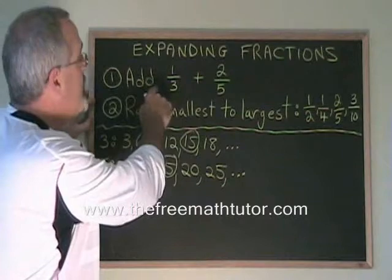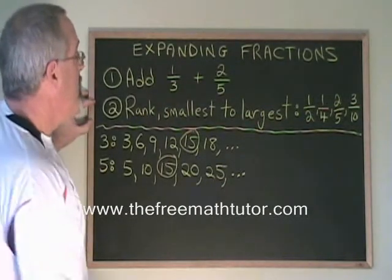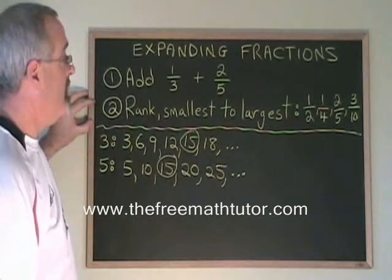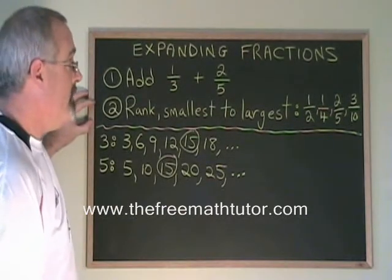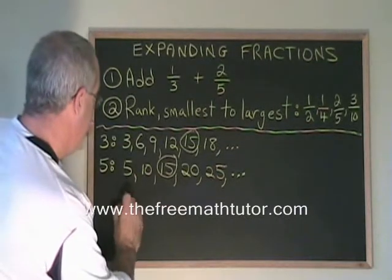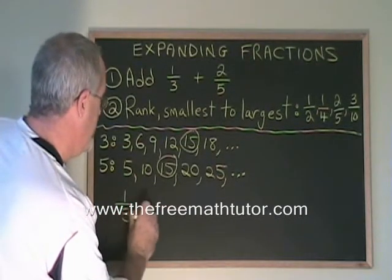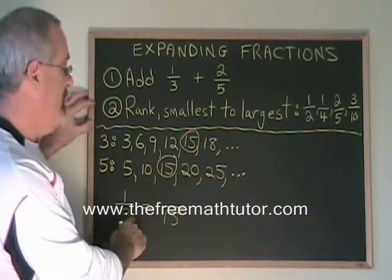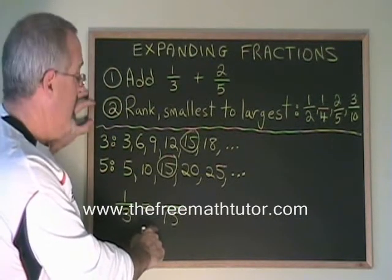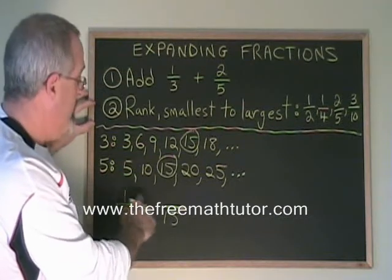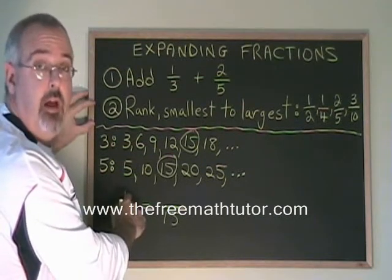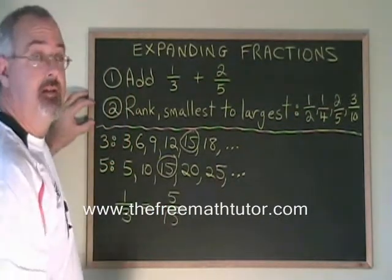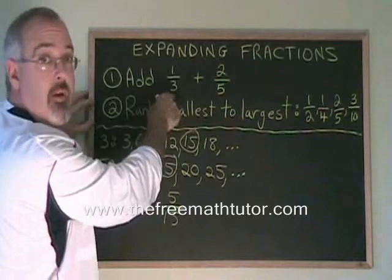Let's finish off by answering question 1. We have to write 1/3 and 2/5 over the common denominator. To get 1/3 to be over a denominator of 15, we have to multiply our 3 by 5. If we're multiplying the bottom by 5, we have to multiply the top by 5, and 1 times 5 is 5. So 5/15 is the expanded version of 1/3.